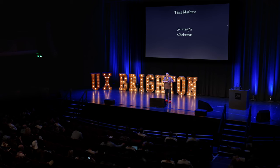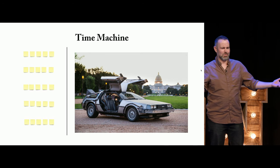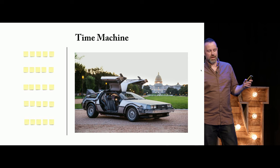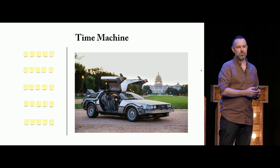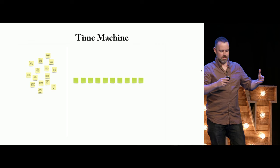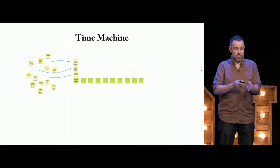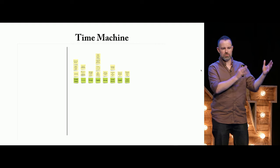Silly example: planning a family Christmas. Everyone's in Miro over a Zoom call. I say: imagine we've jumped in a time machine, traveled to mid-January, and looking back at the best Christmas we've ever had. Everyone writes down what made it so amazing on their post-its. We then cluster all the post-its together — affinity mapping — and give each cluster a theme. What we've got now are people's secret hopes for Christmas, which they might not have been able to tell us upfront.